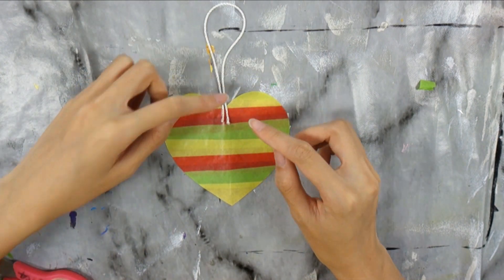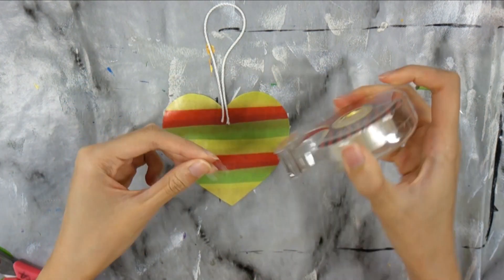Next, fold the piece of string in half and tape it onto the top of the sun catcher.